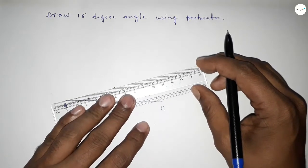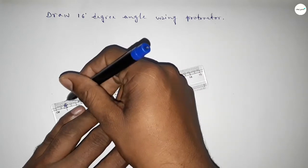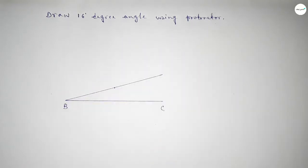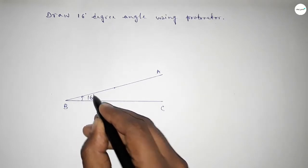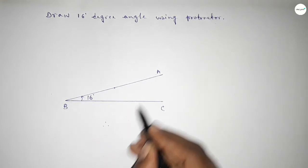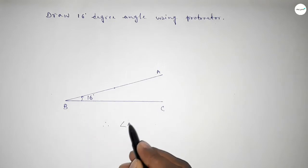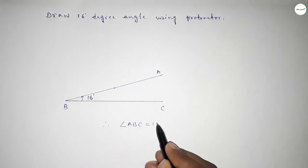Now joining this to get 16 degree angle and taking here point A. So angle ABC, this is 16 degree angle. Therefore angle ABC equal to 16 degrees.